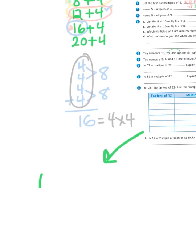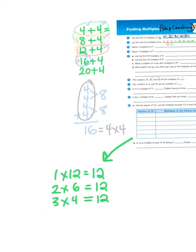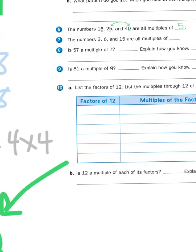I know that 1 times 12 gives me 12. I also know that 2 times 6 gives me 12. I also know that 3 times 4 gives me 12 as well. So, these are my six factors. I have 1, 2, 3, 4, 6, and 12.